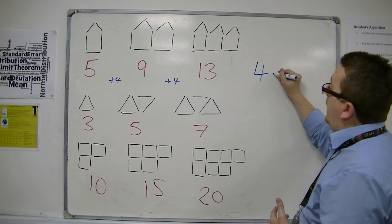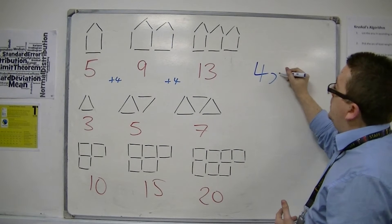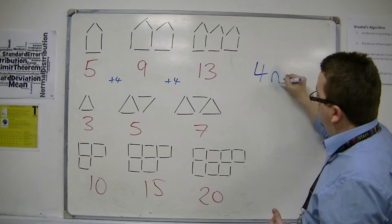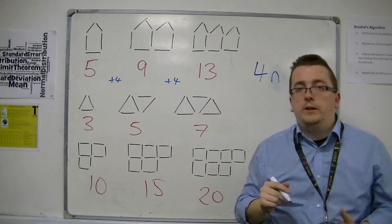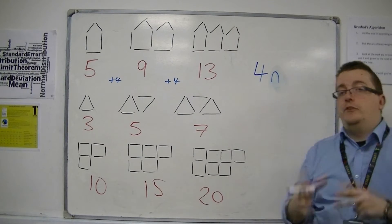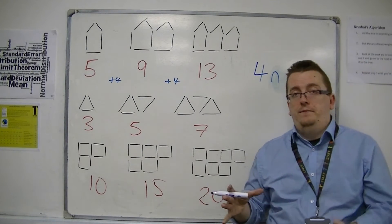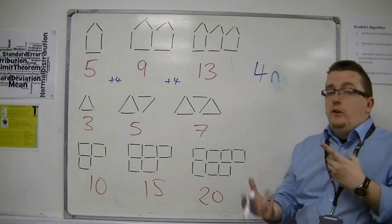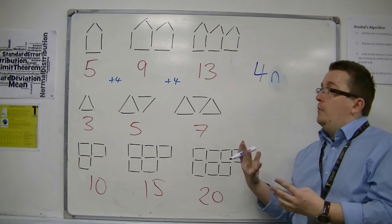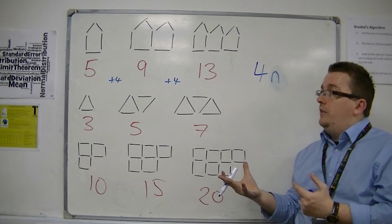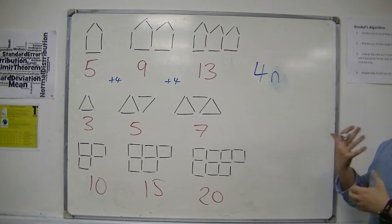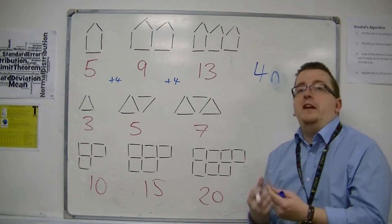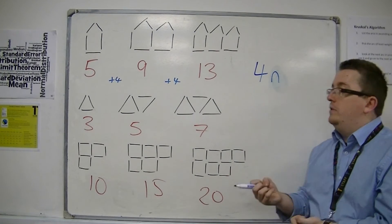But instead of using x, we're going to use n. So instead of 4x, it's 4n. The reason why we use n rather than x for sequences is because we want n to represent a specific number — a specific whole number, really.